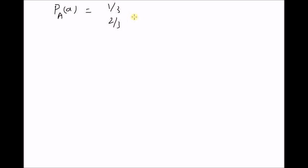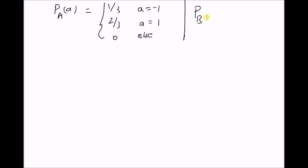Starting with the marginal probability mass function of A, we are given the values as 1/3 and 2/3 for A equal to minus 1 and plus 1, and 0 elsewhere.